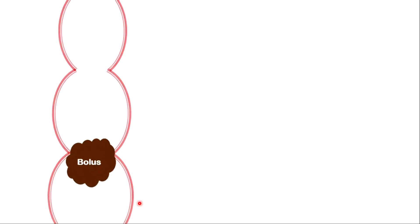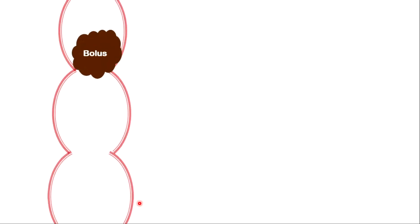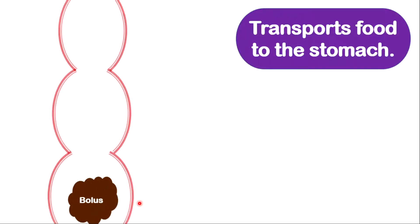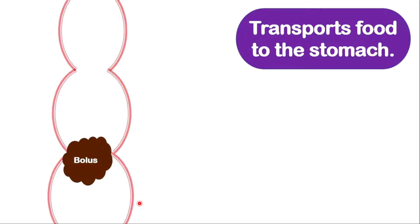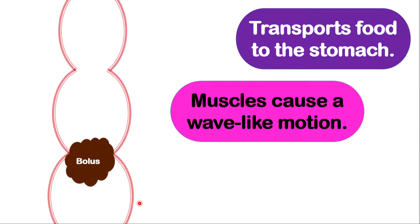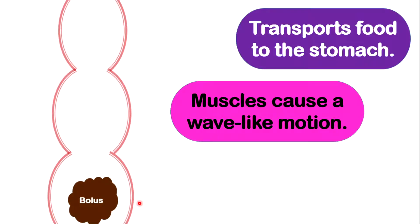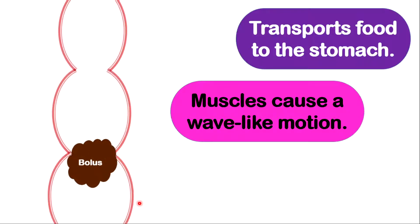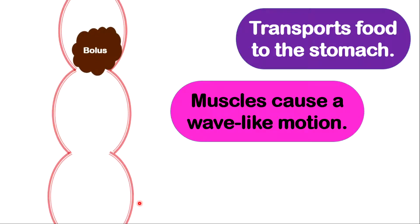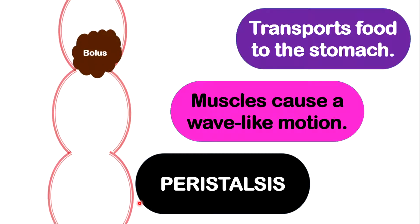Now let's go to the esophagus. The esophagus is a very unique structure. Very important to note that there is no digestion taking place in the esophagus — food is simply being transported to the stomach. The muscles in the esophagus contract and relax, causing a wave-like motion that pushes food down towards the stomach. This wave-like motion or movement is called peristalsis.